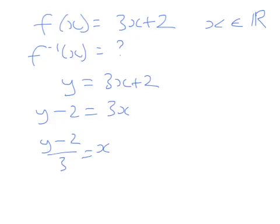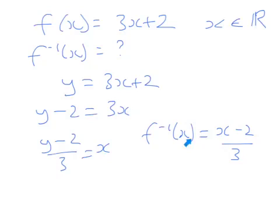Because the domain of the inverse function is the range of the normal function and vice versa, the inverse function is where x and y swap over, so we get x minus 2 over 3. By simply writing y equal to 3x plus 2 and then making x the subject, we end up with the inverse function.